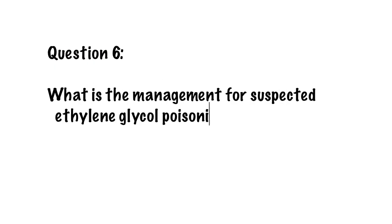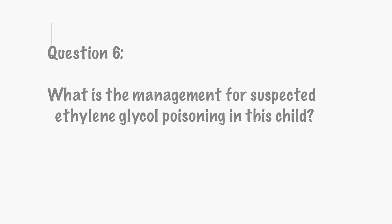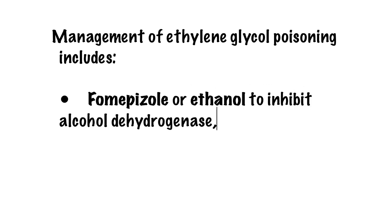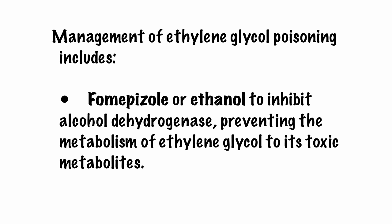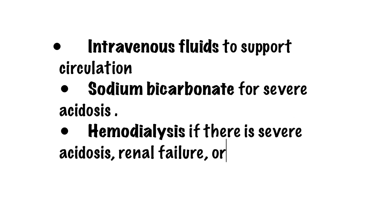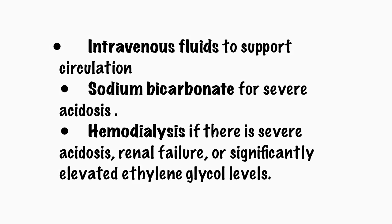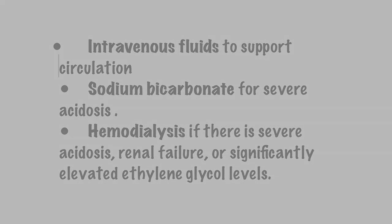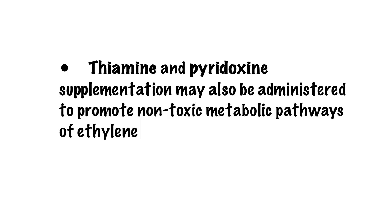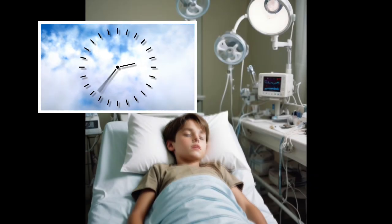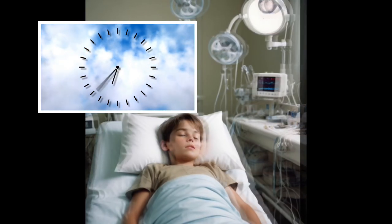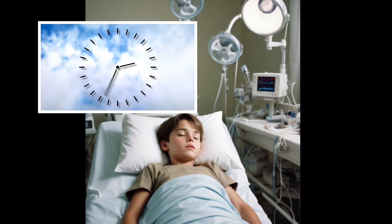Management of ethylene glycol poisoning includes fomepizole or ethanol to inhibit alcohol dehydrogenase, preventing the metabolism of ethylene glycol to its toxic metabolites. Intravenous fluids are given to support circulation, and sodium bicarbonate is used for severe acidosis. Hemodialysis is indicated if there is severe acidosis, renal failure, or significantly elevated ethylene glycol levels. Thiamine and pyridoxine supplementation may also be administered to promote non-toxic metabolic pathways of ethylene glycol. Timely intervention is crucial to prevent complications such as acute renal failure, seizures, or death.